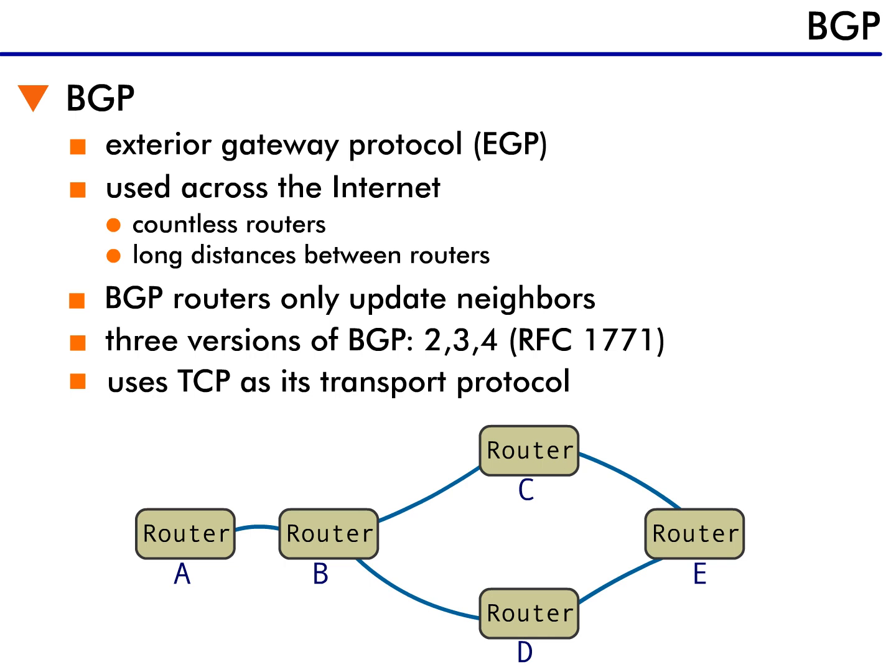The Border Gateway Protocol is an exterior gateway protocol that guarantees the loop-free exchange of routing information between autonomous systems. IGP systems, such as those that use RIP and OSPF, are well-suited for corporate networks because they are able to exchange information between either all routers or a subset of the routers on the network. This is not possible with EGP systems, which are used across the Internet, because the Internet has an enormous number of routers, and the distance between them makes using a protocol like RIP or OSPF impossible.